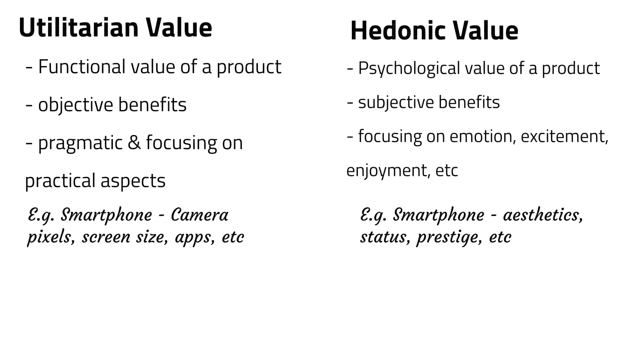Going back to the car example: the utilitarian function is to get from point A to point B, but I'm also buying a car because of how it looks and how it makes me feel. An old car and a new car both provide the functional benefit of transportation, but driving a new car makes me feel successful. Similarly, wearing a five-dollar cashier watch or a Rolex watch both provide the same utilitarian value of telling time, but wearing a Rolex makes me feel special and successful — and many times I might want to show it off to friends.